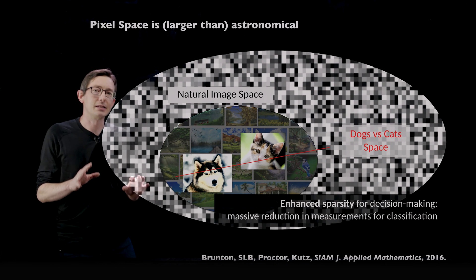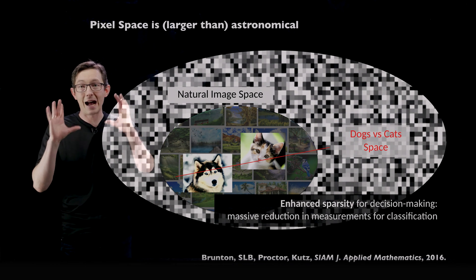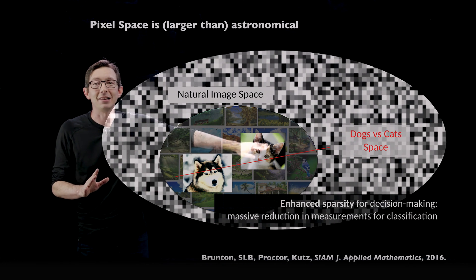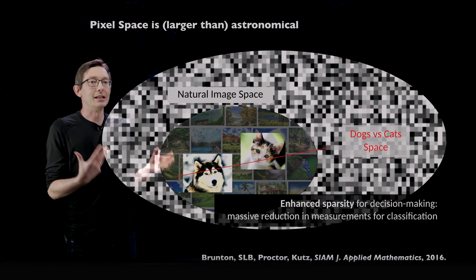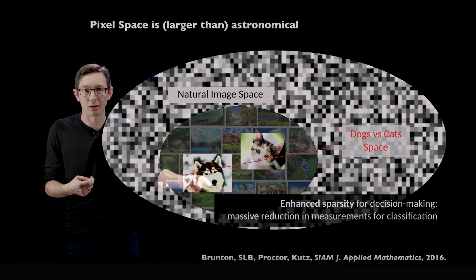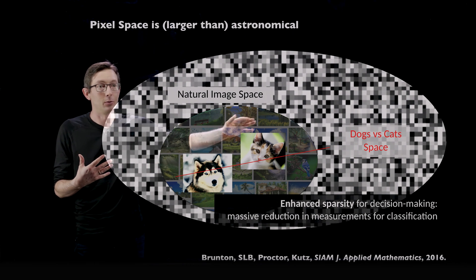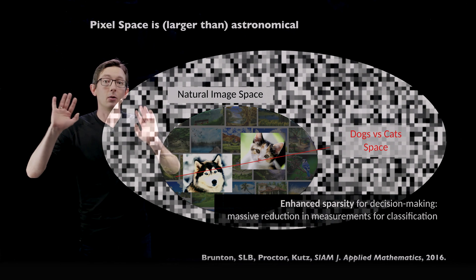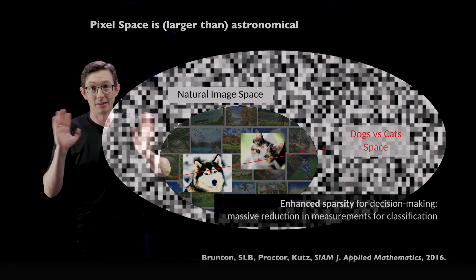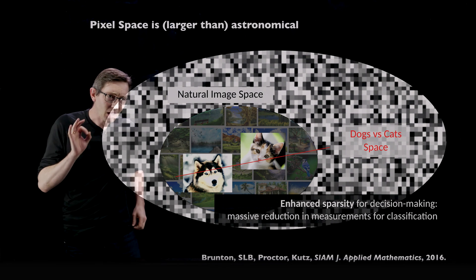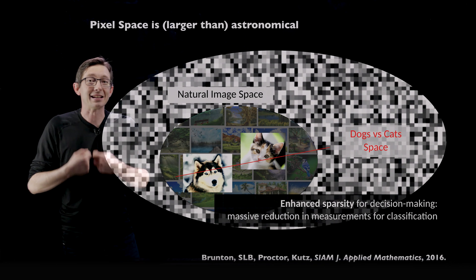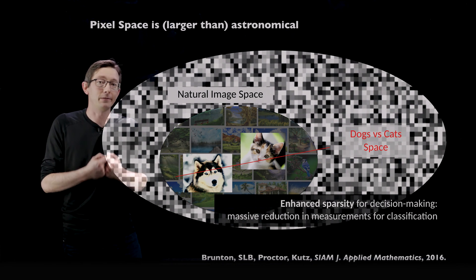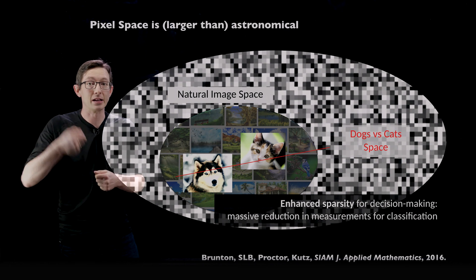The basic idea is that if we're not trying to reconstruct a full image — not trying to get a high resolution reconstruction — and we only want to classify what's in our image, say a binary classification of whether there's a dog or a cat, you can get away with many, many fewer measurements than if you had to reconstruct the image.